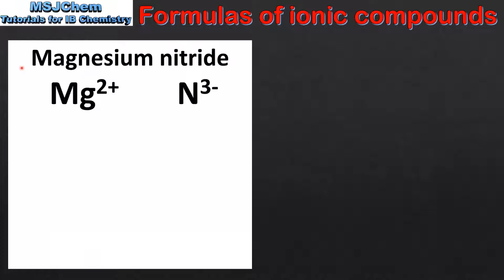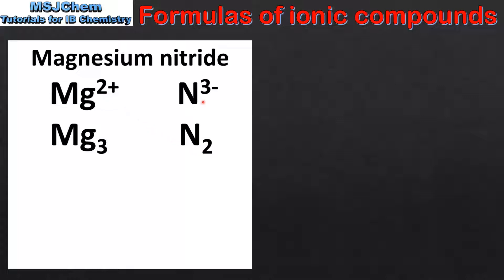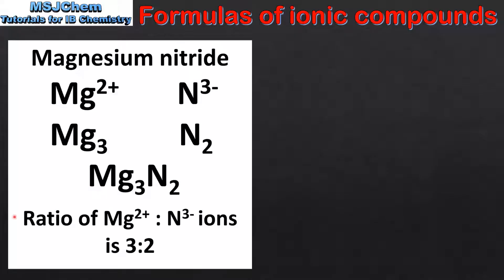Our next example is magnesium nitride, composed of magnesium ions and nitride ions. Using the crossover technique, we take the 2 from the magnesium and write it as a subscript for the nitrogen, and the 3 from the nitrogen becomes a subscript for the magnesium. We then write it as a formula which is Mg₃N₂. This tells us that in a formula unit we have a ratio of Mg²⁺ to N³⁻ ions of 3 to 2. Remember that this ratio is necessary to make magnesium nitride a neutral compound.